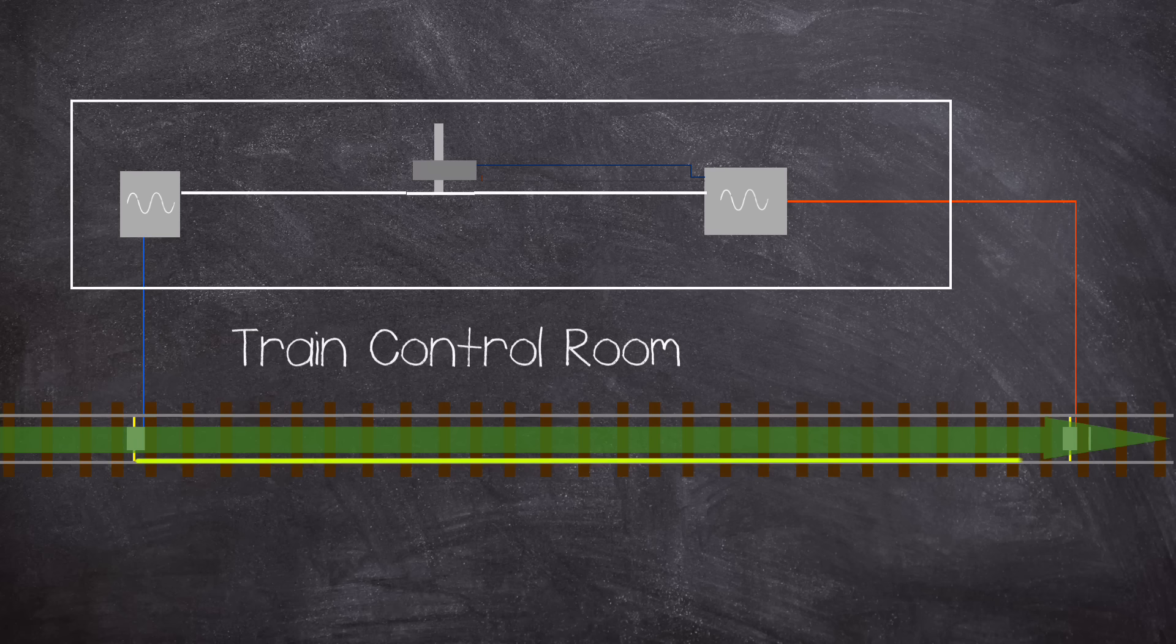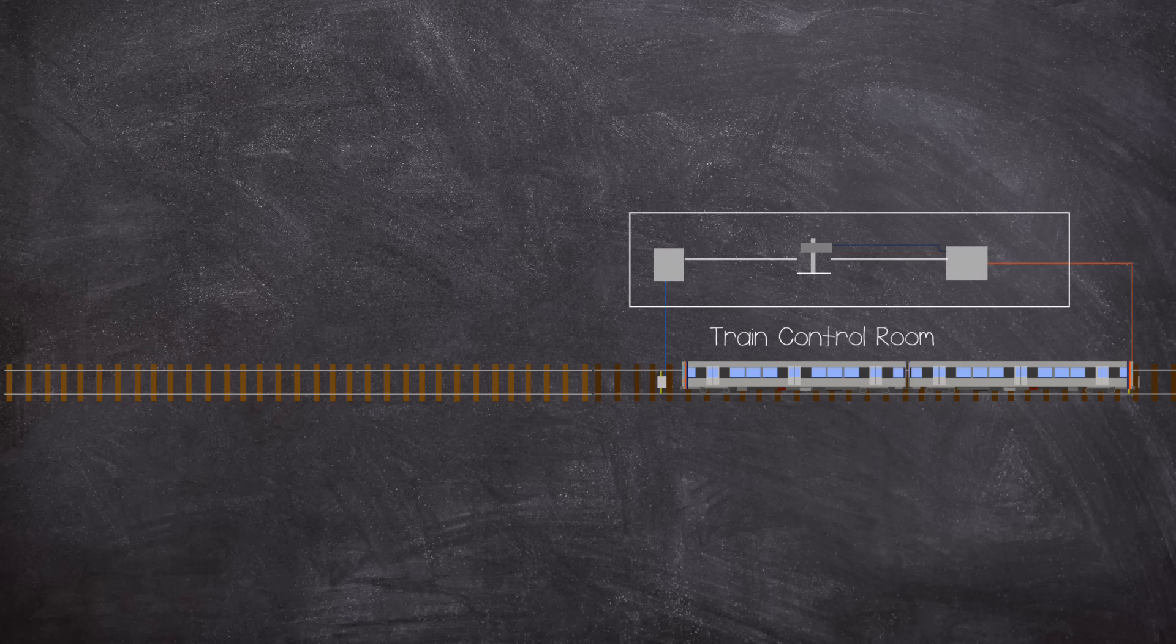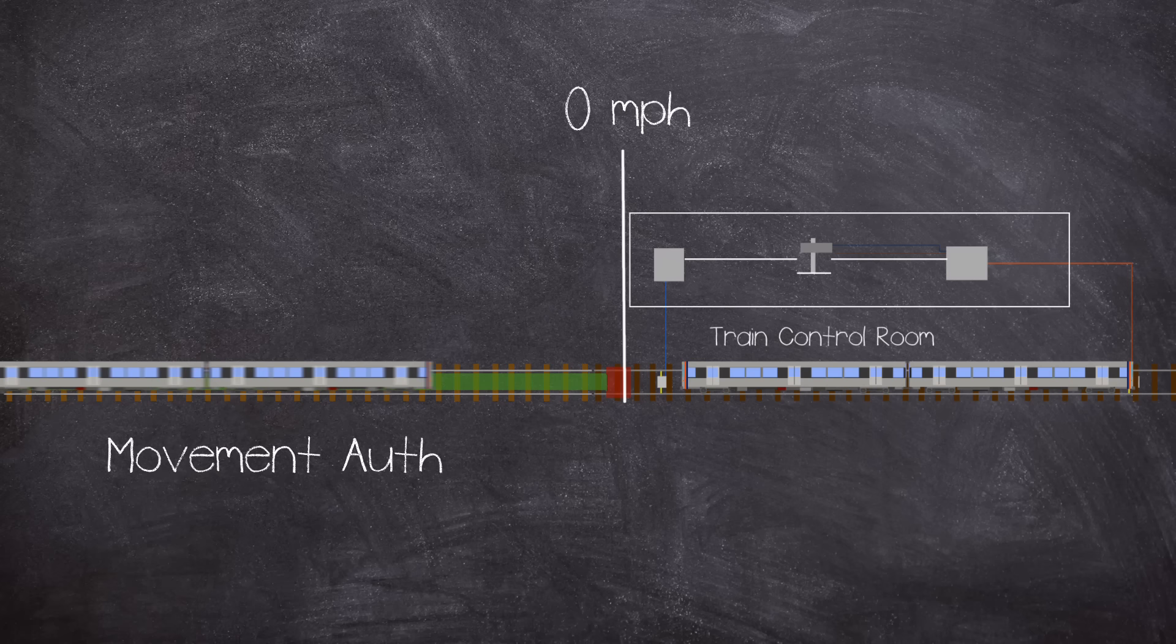If the signal reaches the receiver and matches the transmitted signal, a relay is energized. This tells the ATC system the block is unoccupied and the speed code can be transmitted to the next train. If the train is in the section, the train's wheels interrupt the audio signal and the relay de-energizes, telling the system there is a train in the section.